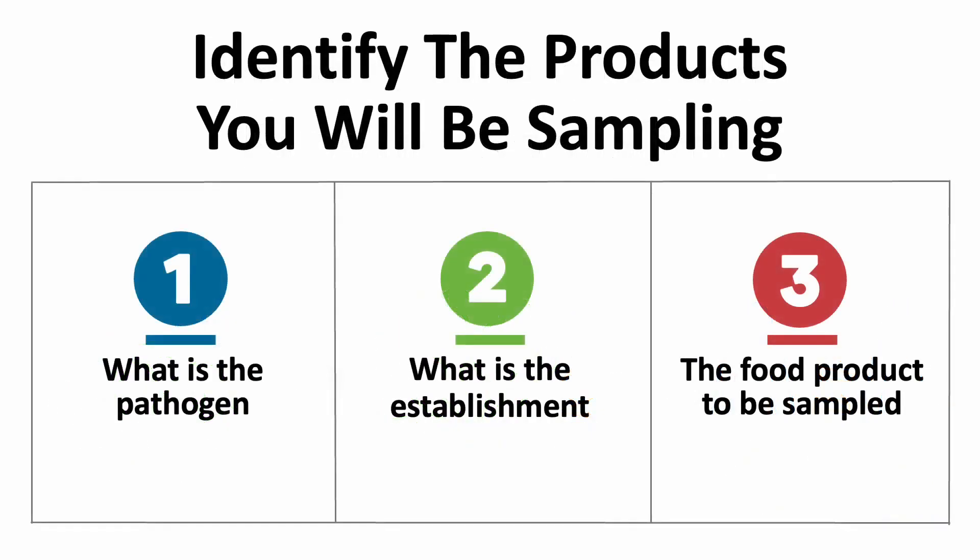Before you can sample, you must first identify the pathogen of interest, the establishment in which you will be obtaining samples from, and the food products you will be sampling. It is important to communicate effectively and efficiently with your epidemiological partners to obtain this information. Your partner epidemiologists and laboratorians will have data generated from interviews and laboratory specimens to form a hypothesis of a suspected establishment and one or more suspected food vehicles that could be associated with the outbreak.